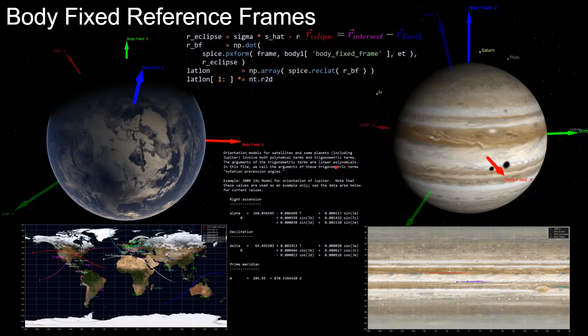So the spice software system takes care of this calculation for us. So all we need to do is call the spice function pxform, giving it the frame that we currently have, which is the J2000 or EME 2000 frame, the frame that we want, which is the planet's bodyfix reference frame and the ephemeris time of that calculation. And it will return us a rotation matrix that we then use to calculate the eclipse vector in that bodyfix frame.